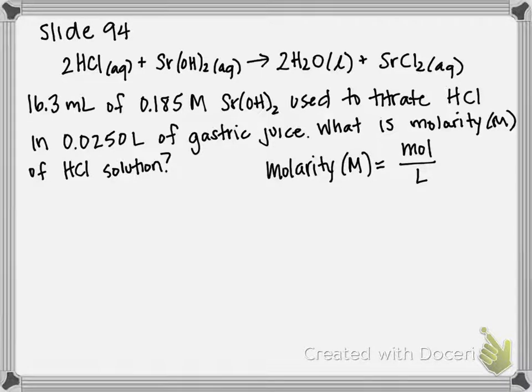This is the titration of an acid. It states if 16.3 milliliters of a 0.185 molar strontium hydroxide solution is used to titrate the hydrochloric acid in 0.025 liters of gastric juice, what is the molarity of the HCl solution? And then they give us the balanced equation which is very nice, very helpful.